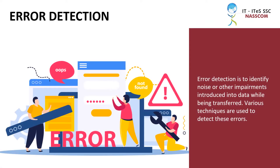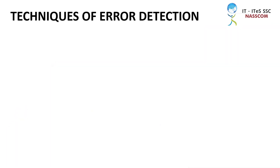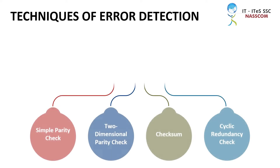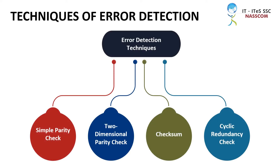Error detection is used to identify noise or other impairments introduced into data while it is being transferred. Various techniques are used to detect these errors. There are four techniques used for error detection.